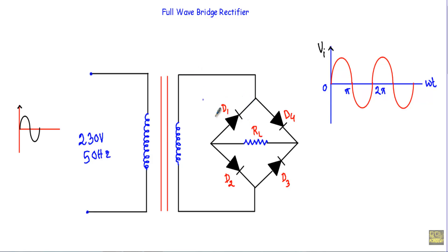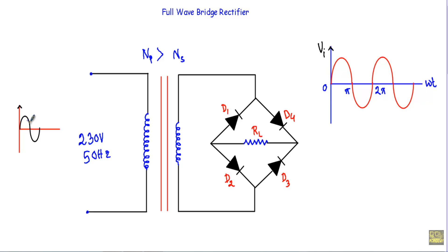The secondary winding of the transformer serves as the input voltage source for this rectifier circuit. We are using a step-down transformer, so the number of turns in the primary winding NP must be greater than the number of turns in the secondary winding. At the input terminals of the primary side, we apply a time-varying sinusoidal voltage.